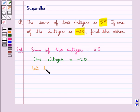So let the other integer be equal to x. So we have x plus of minus 20 is equal to 55.